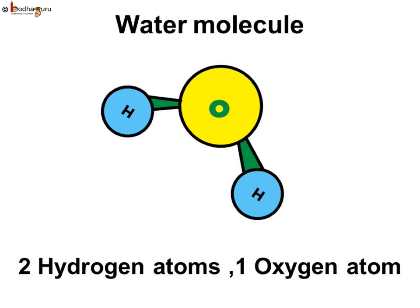For example, in water there are two atoms of hydrogen and one atom of oxygen. Hydrogen and oxygen are names of atoms.